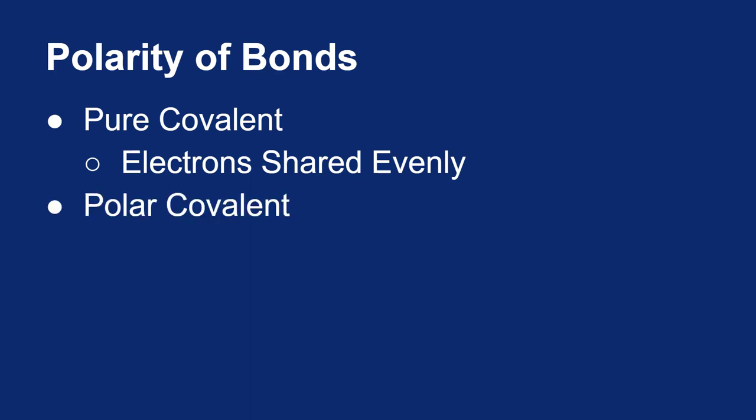Polar covalent bonds mean that the electrons are still being shared, but now they're being shared unevenly. If you have a difference in electronegativity of around 0.4 to 1.9, we consider the bond still to be covalent, but just polar covalent.